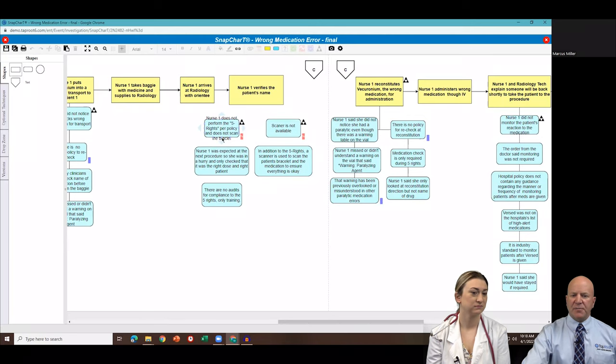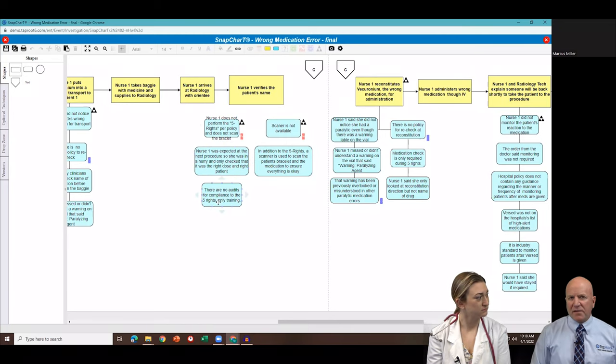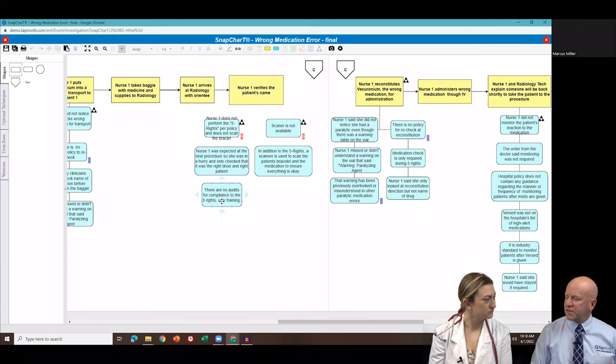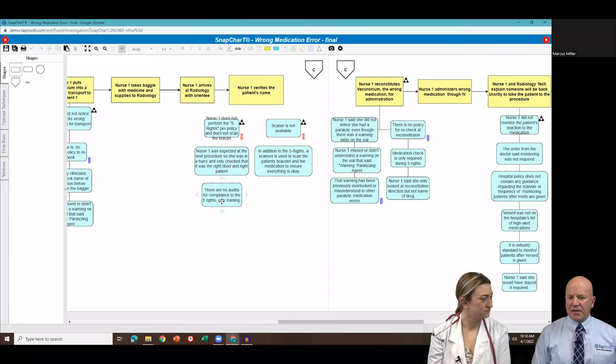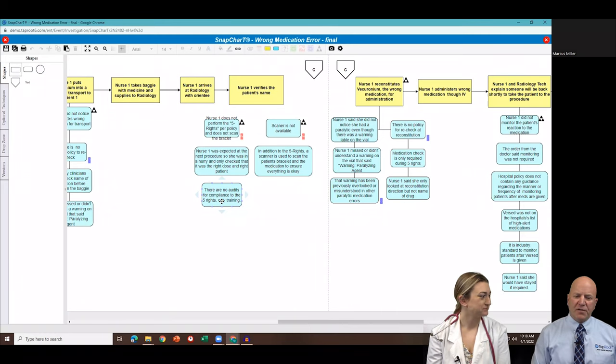Now, most medical centers, you scan the bracelet, you scan the medication and the system tells you that everything's okay. Well, radiology didn't have this technology. So another safeguard that's supposed to be put in place failed this nurse. So she couldn't scan it. So that didn't happen. Another mistake that needs to go through root cause analysis. The nurse was expected at the next procedure. So she was in a hurry and she didn't do the full five rights. She just does the patient's name. And there's no audits at the medical center for five rights. It's just general training that nurses get.